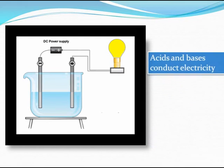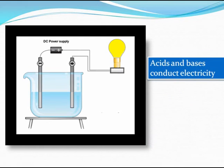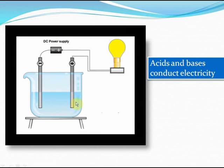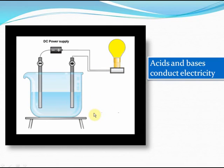Another interesting property of acids and bases is that they conduct electricity. In this picture you can see that when a battery is connected through an acid solution, the bulb lights up. That is because acids and bases are electrolytes — they conduct electricity. So these were the main physical properties of acids and bases.